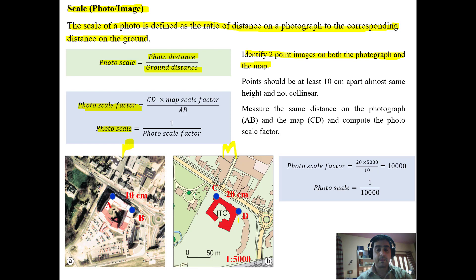The scale of the map is already known, but the scale of the photo is not known and we have to determine that. Photo scale factor will be equal to CD times map scale factor upon AB, and photo scale will be 1 upon photo scale factor.